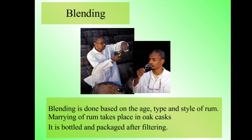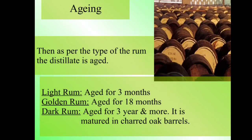The marrying of rum takes place in oak casks, and it is bottled and packaged after filtering. Regarding aging, as per the type of rum: light rum is aged for three months, golden rum is aged for 18 months, and dark rum is aged for three years or more. It is matured in charred oak barrels.